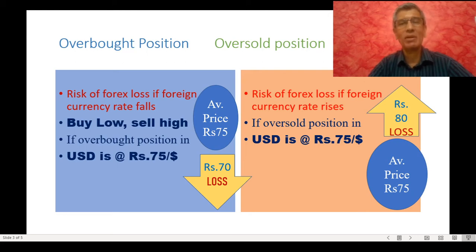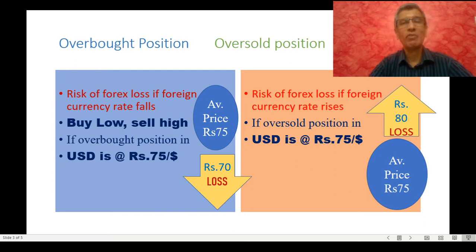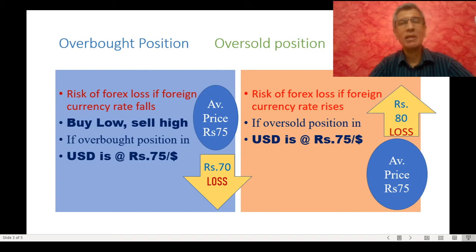Let us take simple examples. Assume that a bank has an overbought position at 75 rupees to a dollar. If the foreign currency rates fall to say 70 rupees to a dollar, then the authorized dealer will have to square its position by selling at 70 rupees to a dollar. This means it bought at a higher rate of 75 rupees and must sell at the lower rate of 70 rupees, resulting in a foreign exchange loss of 5 rupees per dollar.